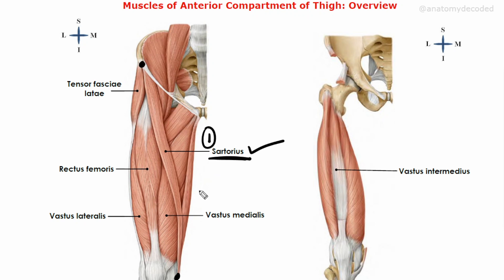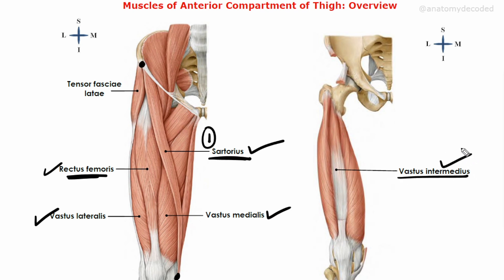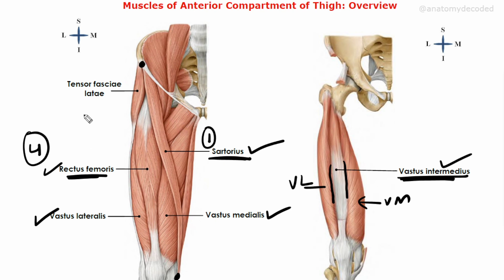Next we'll learn a group of muscles called quadriceps femoris, which includes four muscles: rectus femoris, vastus lateralis, vastus medialis, and vastus intermedius — a muscle deep to rectus femoris. These four muscles together are referred to as quadriceps femoris. In this image, the central part is vastus intermedius, with vastus medialis on one side and vastus lateralis on the other.